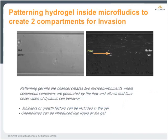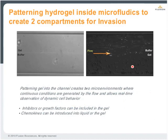For invasion assays, we can use parallel flow to create a gel region inside the channel, as if you were using a Boyden chamber turned on its side. The gel can be dosed with compounds or growth factors, and then the cellular response can be followed in time-lapse. A channel in brightfield shows gel patterned in the top of the channel and buffer in the bottom, and fluorescent beads included inside the gel confirm the patterning — this can be very useful for setting up a variety of conditions to follow in time-lapse.